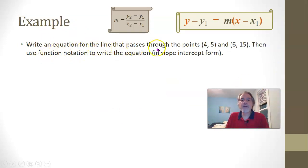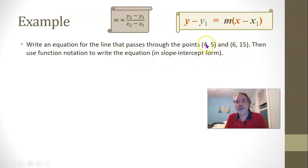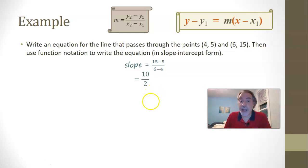Write an equation for the line that passes through the points 4, 5 and 6, 15, then use function notation to write the equation in slope-intercept form. First, calculate the slope: y-coordinate minus y-coordinate over x-coordinate minus x-coordinate. The second number from each pair goes on top, the first number on the bottom. So that's 15 minus 5 over 6 minus 4, which is 10 over 2, which equals 5. So the slope is 5.